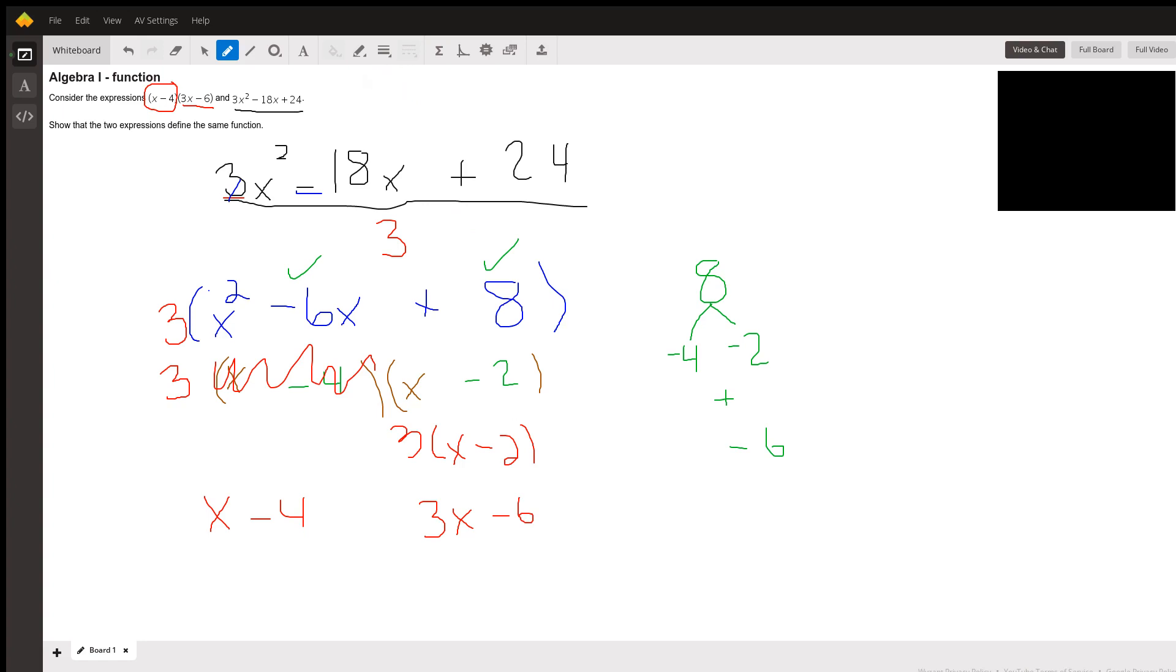So let's find a color I have not used. We have our x minus 4 and we have our 3x minus 6. And if you look, that's exactly the same. So once you find the GCF of 3x squared minus 18x plus 24, and then you go ahead and you factor it out and you end up with identical factorization, then this is the same function. Well, hopefully this was helpful. Have a great day.